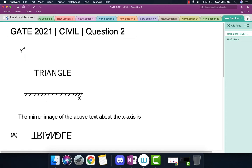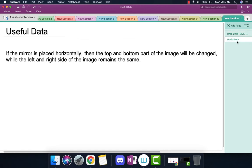The useful data to keep in mind while solving these questions is: if the mirror is placed horizontally, such as the x-axis in this question, then the top and bottom parts of the image will be changed, while the left and right sides of the image remain the same.